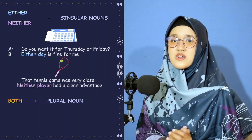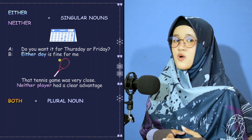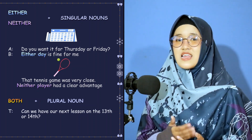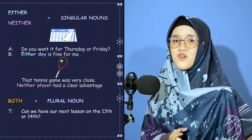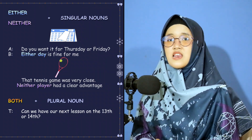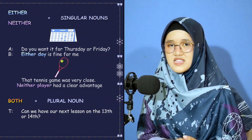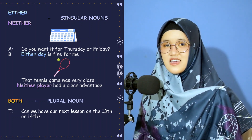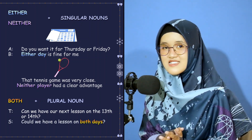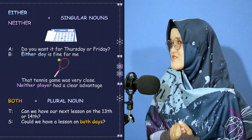'Both' is used with plural nouns. For example: 'Can we have our next lesson on the 13th or 14th?' If the student wanted to book a lesson on both the 13th and the 14th, he or she could say: 'Could we have a lesson on both days?' — both plus plural noun.